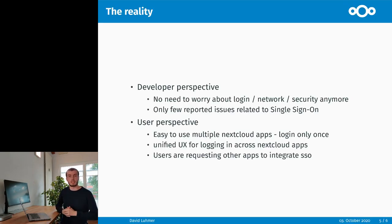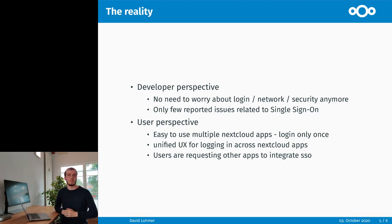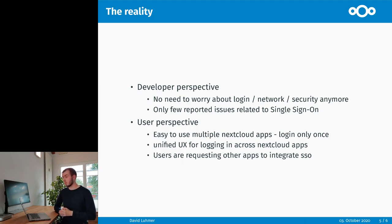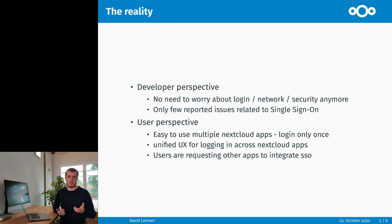Let's summarize our experience — what the reality looks like. From a developer's perspective, we didn't have to worry about login security and network-related issues anymore, because all of this is handled by the Nextcloud Single Sign-On system. For all three apps, we had very few issues reported on GitHub about the Single Sign-On system. Before, there were a lot of issues related to network problems, self-signed certificates, and all kinds of network-related stuff — that's all gone now. From a user's perspective, it's now way easier to log in to multiple apps — just three taps — and the unified login experience looks the same across all apps. Users are actually requesting that other apps which don't use Single Sign-On yet should integrate it.